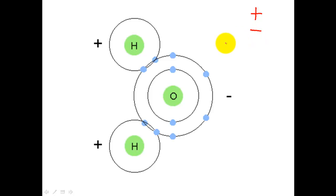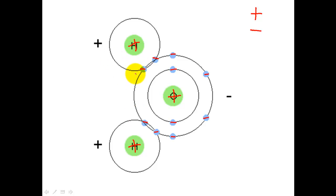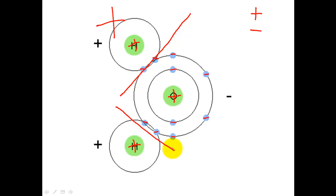In order to determine polarity, I need to examine all the charges in the molecule. Each electron is a negative charge, and I'm going to label all my electrons as negative charges. I want you to look at the location of the electrons. Then I'm going to label the nucleus — the middle of the atom — as plus. Once I've done this, I can see one side of the molecule is positive because there are no electrons there, and this side is negative because all the electrons are here. This would be considered a polar molecule.